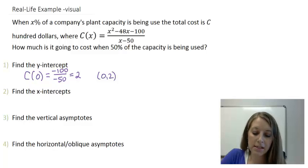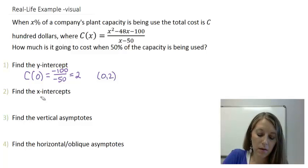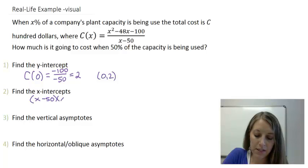I find my x-intercept by setting my numerator equal to zero. Technically the whole equation, but we can always cancel out the denominator. Now that factors, we just did it in the last slide, (x minus 50)(x plus 2). So that gives me intercepts of (50, 0) and (negative 2, 0).